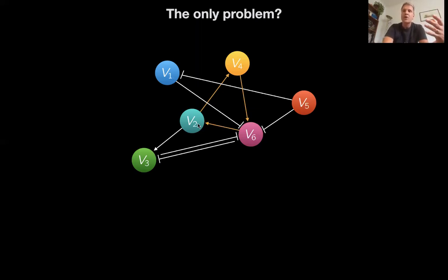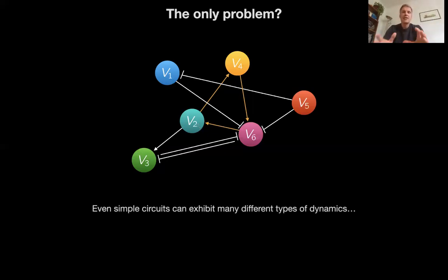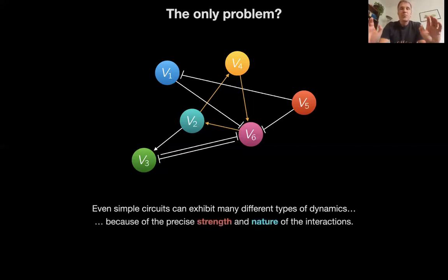So, here, we should be fine. But the problem is, even here, even this simple circuit exhibits many different types of dynamics. This is a feedback loop, not a feed forward motive. Again, I apologize for the confusion.